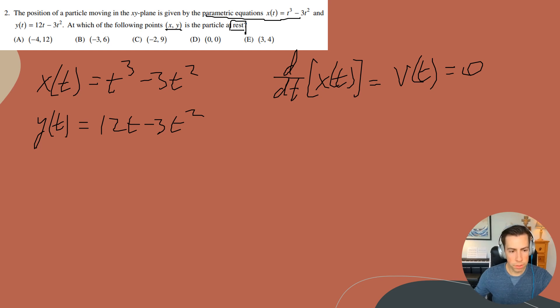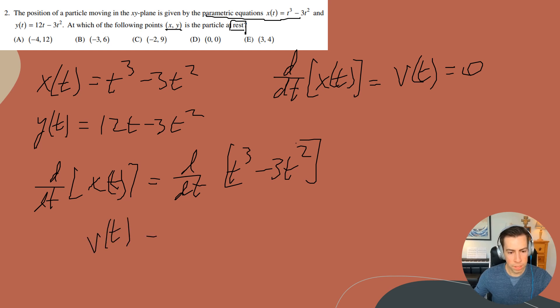So what I can do is come over here and take the derivative with respect to time of my position function at x, and I'll do that to both sides. So I will get t cubed minus 3t squared. When I take the derivative of that, I'll get my velocity is equal to 3t squared minus 6t. And I want to figure out at what time t is this equal to zero.